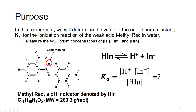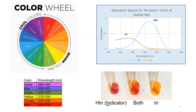The goal is to determine these values — the concentration of H⁺, In⁻, and HIn. To determine the concentration of H⁺, we're going to use a pH probe. To determine the concentrations of In⁻ and HIn, we'll have to use absorbance spectroscopy.